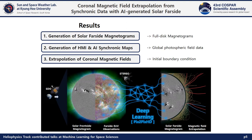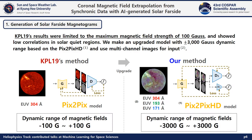Here we show an upgraded model to generate solar far-side magnetograms, then we make an improved global photospheric data using the generated ones, and we extrapolate coronal magnetic fields from the improved photospheric data. The research of Kim et al. was limited to generating strong magnetic fields of solar active regions and showed low correlations in solar quiet regions. Here we used the pix2pixHD model, which is an enhanced version of the pix2pix model using normalizing flow functions and multi-scale architectures of the networks.